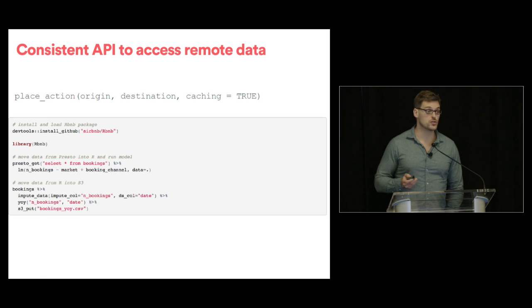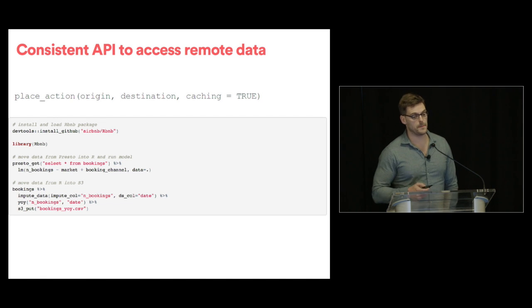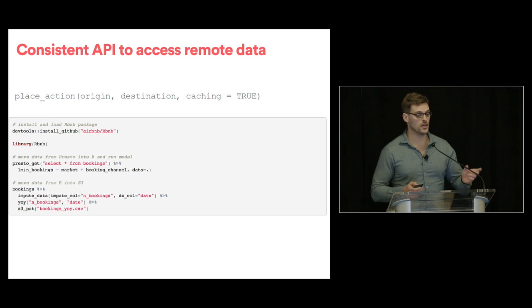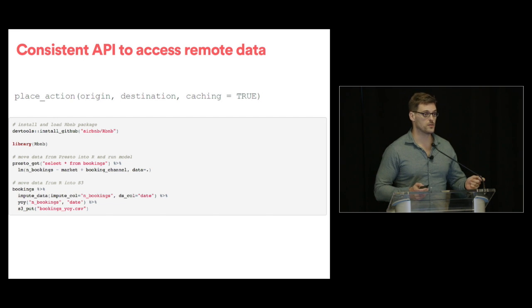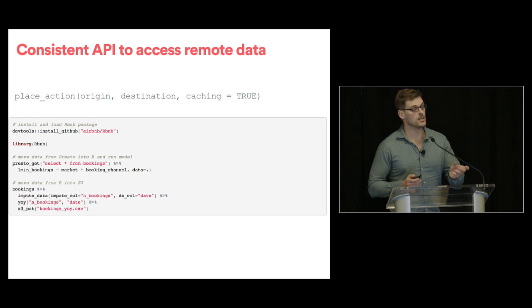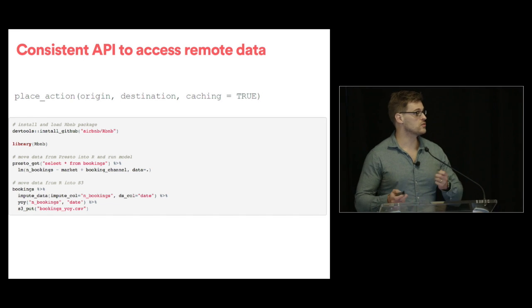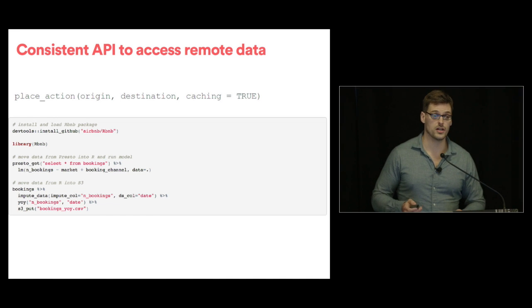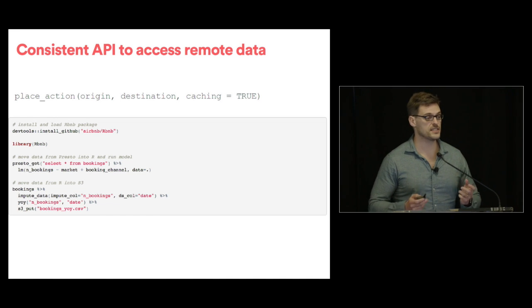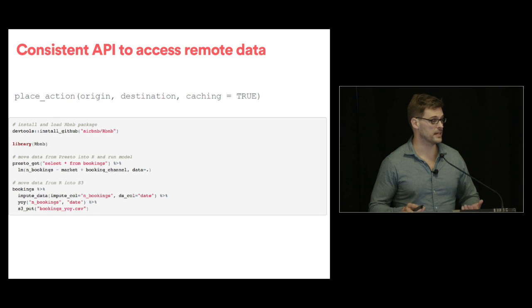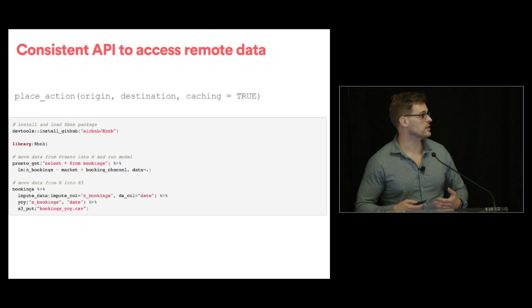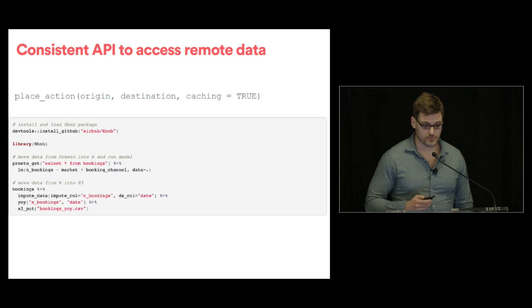The most used component is the consistent API to access remote data. We have a consistent place-action-origin-destination function, and with this we can move data between anywhere in our data infrastructure. If I want to get data from HDFS, I do HDFS get with the path and it loads into a data frame in R. If I want to put data into S3, I do S3 put with the dataset and destination. This interface does not change even when the underlying databases change dramatically — we had a massive cluster migration, and with one simple package update, all the backend changes were implemented with no disruption.